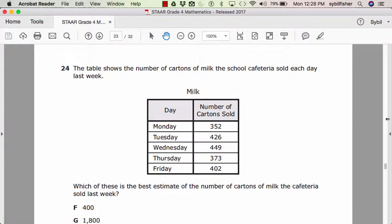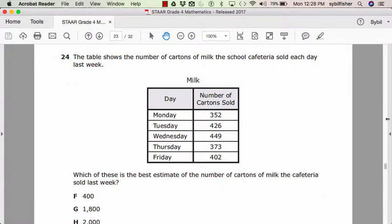The table shows the number of cartons of milk the school cafeteria sold each day last week. Monday, Tuesday, Wednesday, Thursday, Friday, and then it tells the number of cartons sold. Which of these is the best estimate of the number of cartons of milk the cafeteria sold last week?